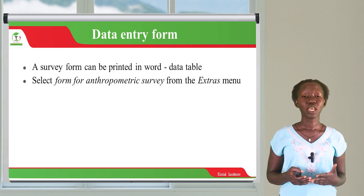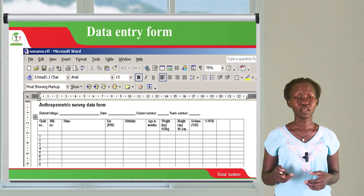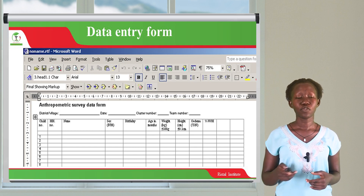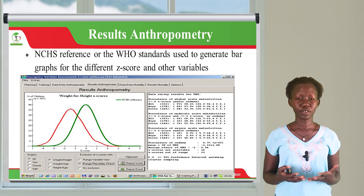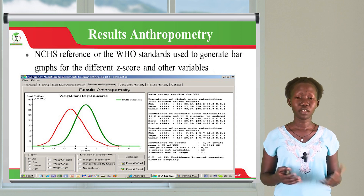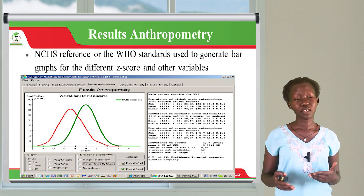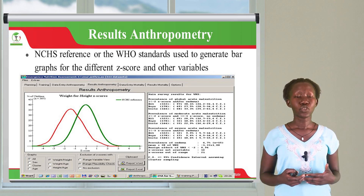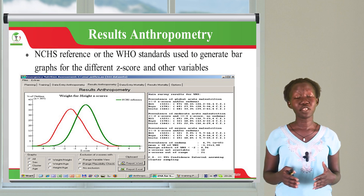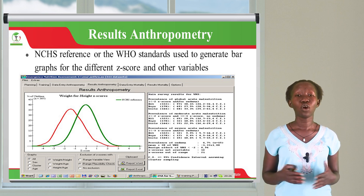The data entry form can also be fitted with additional fields — you can select the form for a community survey from the extras menu. You also have the results sheet. This sheet gives you all the results according to the records you have entered. After you plan with the planning sheet and enter your data, you instruct ENA for SMART to view the results. You have to give it the range and the standards you're going to work with — either the NCHS reference or WHO standards — used to generate Z-scores for different variables.